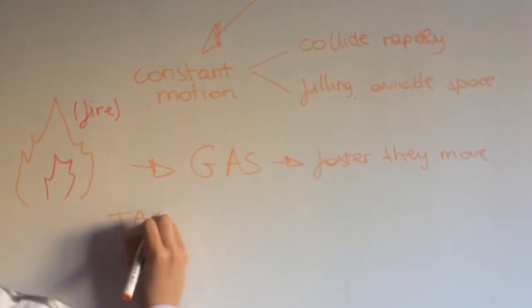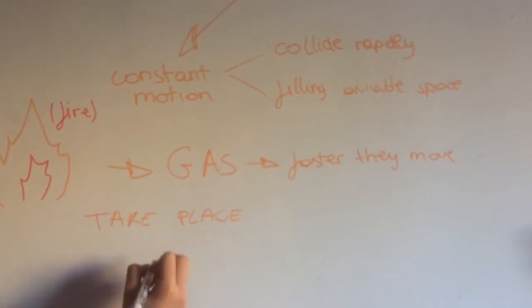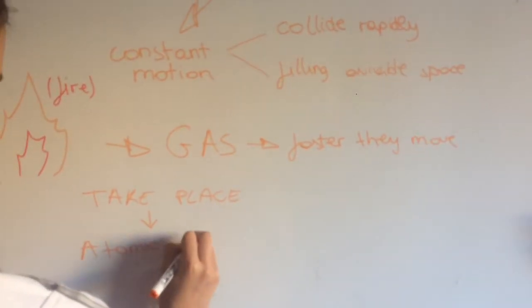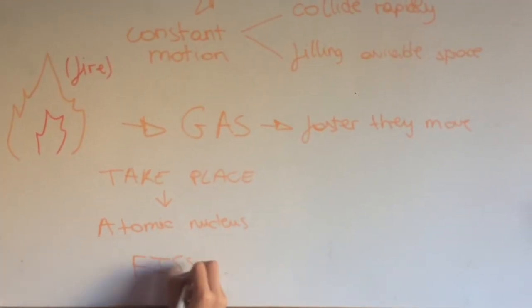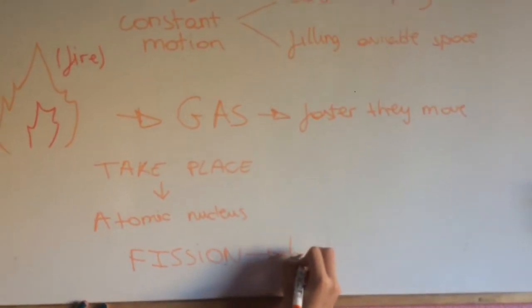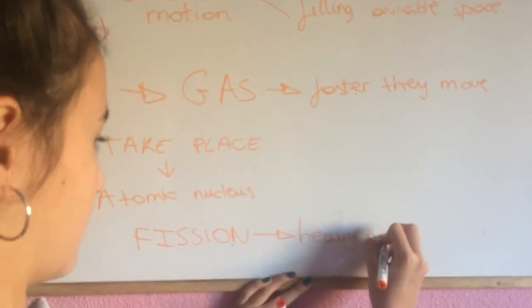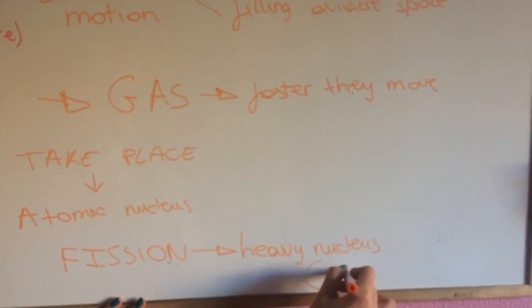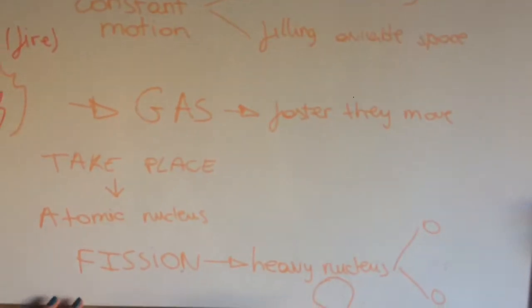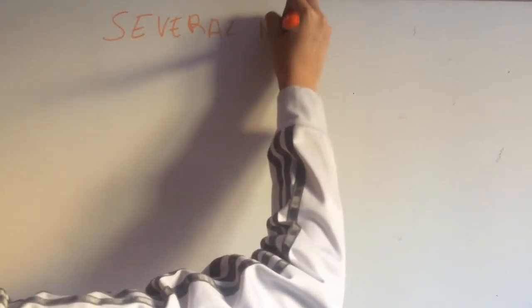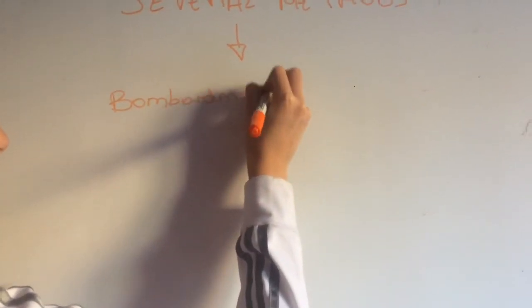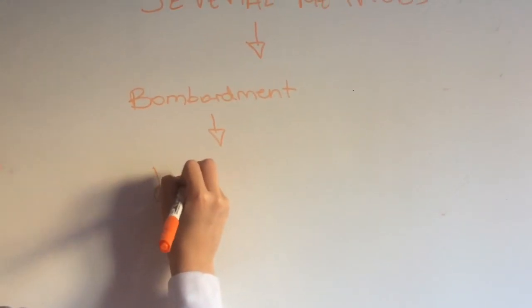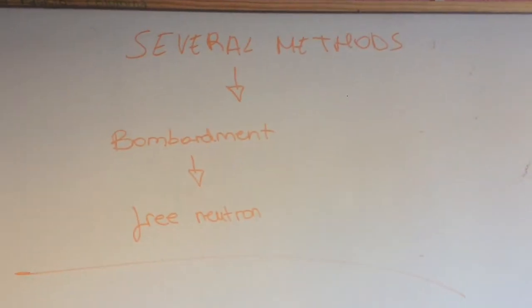On nuclear species, fission is a nuclear reaction which means that it takes place in the atomic nucleus. Fission occurs when a heavy nucleus divides into two or more smaller nuclei, in addition to some by-products such as free neutrons or photons. Fission can be induced by several methods, including the bombardment of the nucleus of a fissile atom with a particle of sufficient energy. The particle is generally a free neutron.